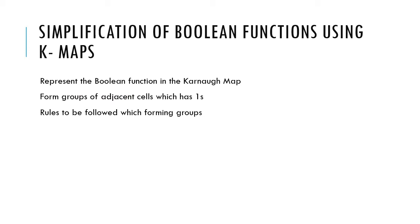The first step towards performing simplification of boolean functions in a Karnaugh map is that we have to form groups of cells — not just any cells, but cells which contain one and which are adjacent. While forming these groups, we have to follow certain rules.